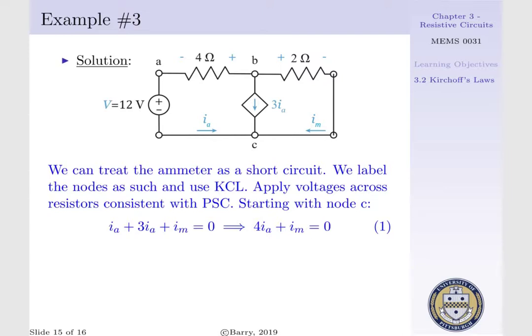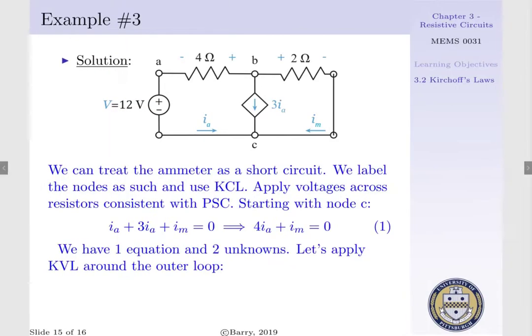Now to relate IA and IM, we will apply KVL along our outer loop. That is to say, we only have one equation and two unknowns, such that we have to construct another equation. Constructing a KCL equation at B would result in the same expression, which is not useful.